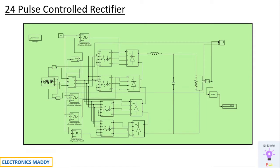This is the circuit diagram of a 24 pulse control rectifier. This can be built in two ways — by having two 12 pulse control rectifiers or by having four six pulse control rectifiers. I am going to do the one with four six pulse control rectifiers. I demonstrated a video on an 18 pulse control rectifier as well, and this is basically an extension of that — we'll be adding one more bridge and one more zigzag transformer.